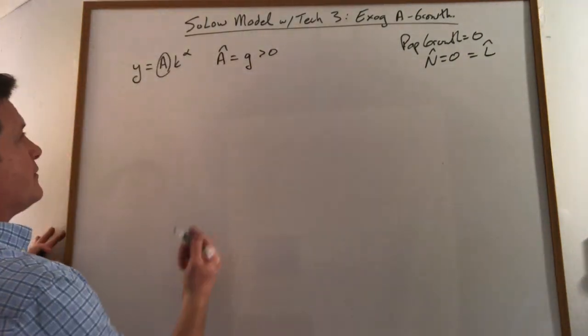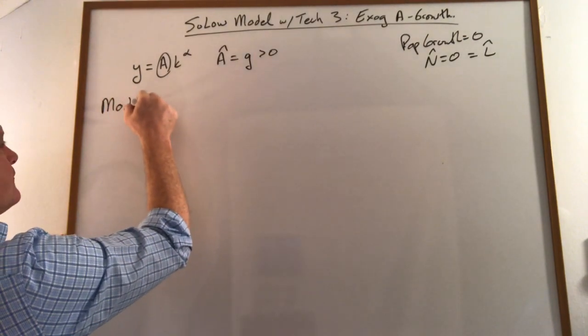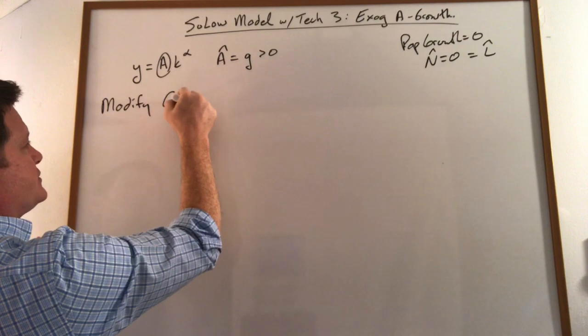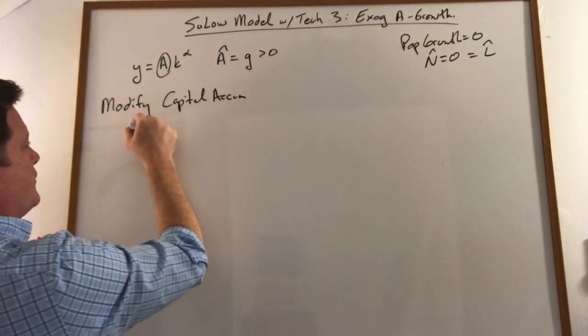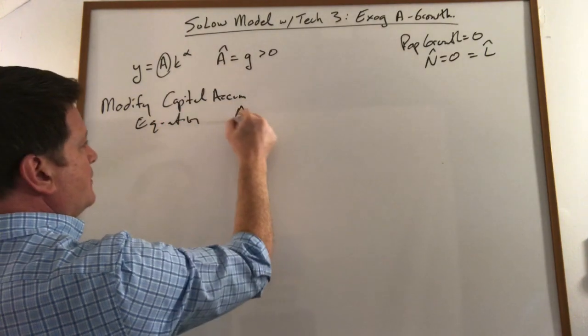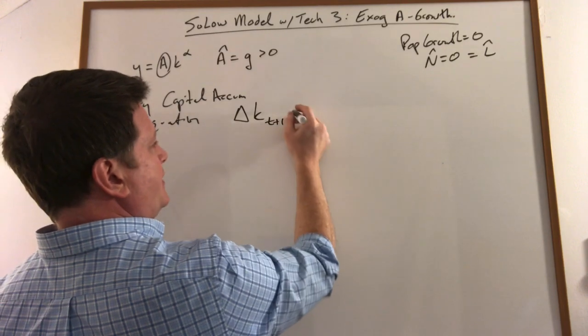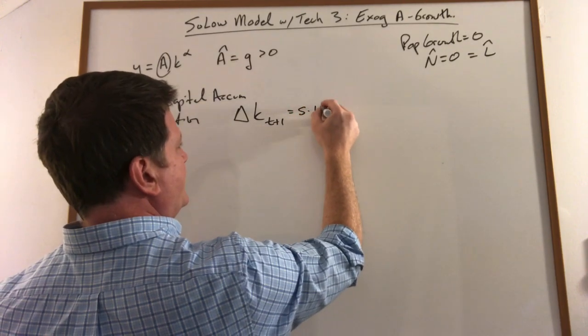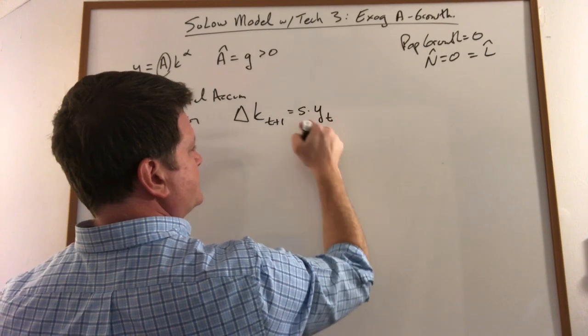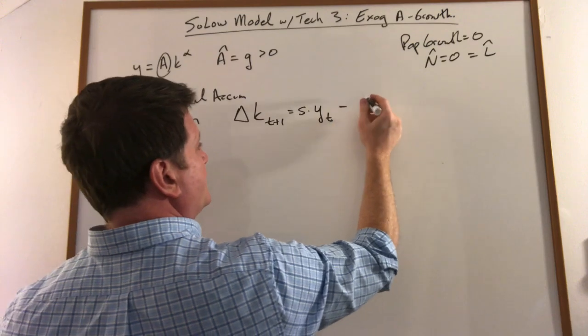A couple of things to note. The biggest change is we modify the capital accumulation equation. The accumulation equation now becomes the change in the capital stock per worker is S times this, which is our savings rate times output, which is our total savings or total investment in this economy.